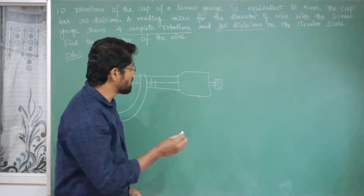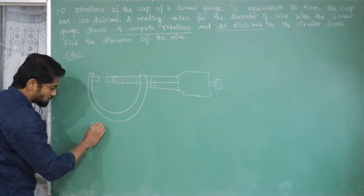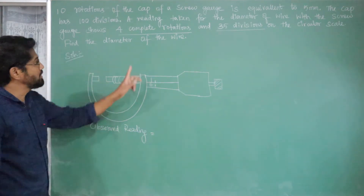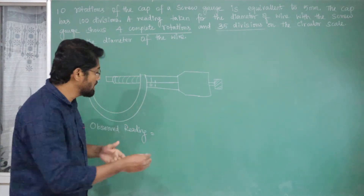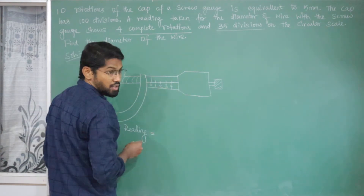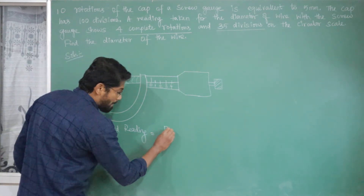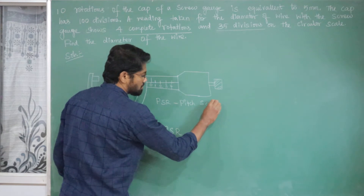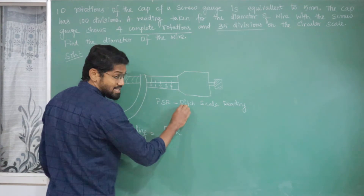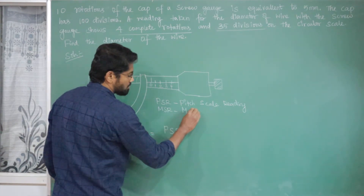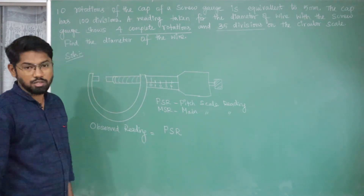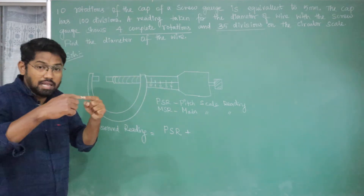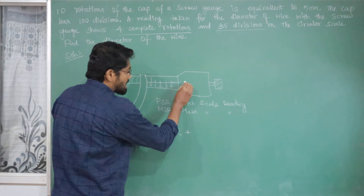We will use this formula for the observed reading. The observed reading equals the pitch scale reading (PSR) — sometimes called the main scale reading (MSR) — plus the circular scale reading. For 4 complete rotations, 1, 2, 3, 4 divisions are covered on the pitch scale. Upon that observed reading, it is the pitch scale reading, plus 35 divisions on the circular scale.